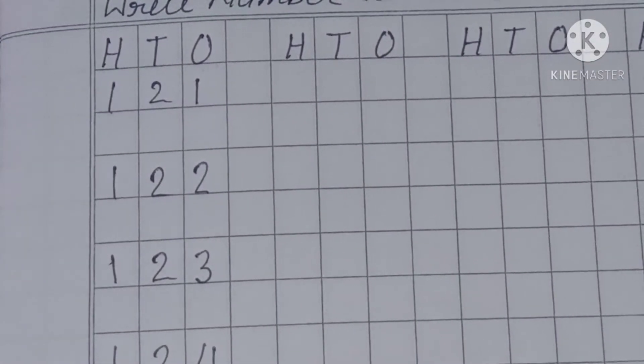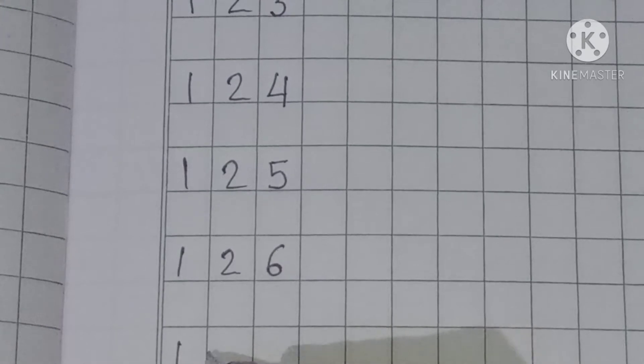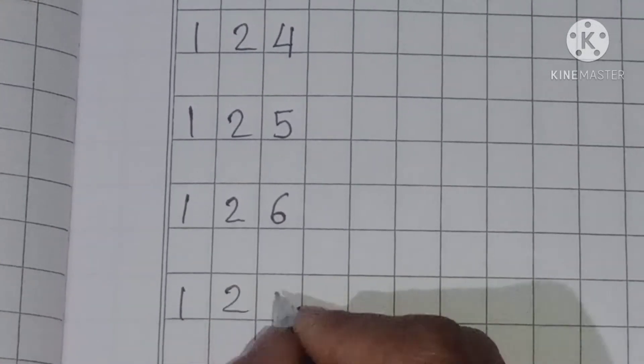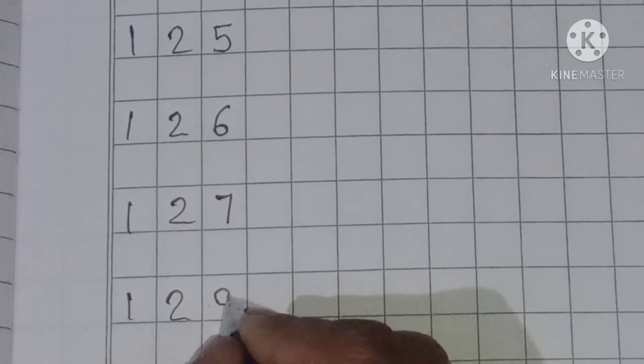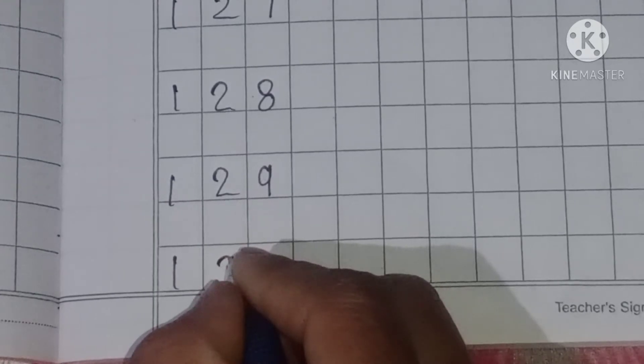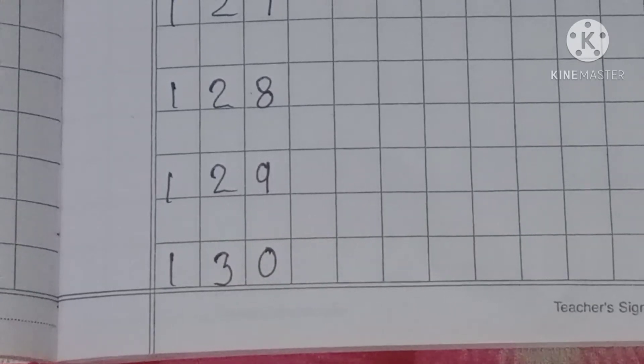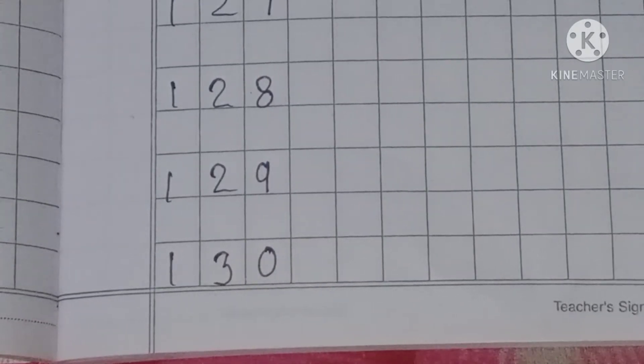1, 2, 5: 125. 1, 2, 6: 126. 1, 2, 7: 127. Next number 128, 129, and 130. So once again...